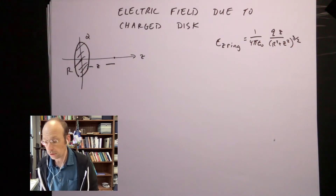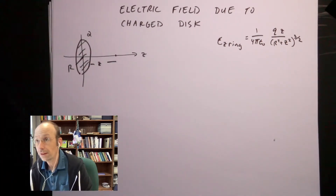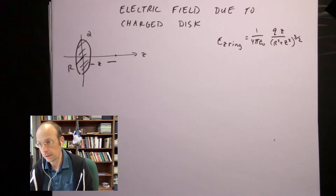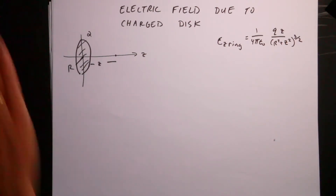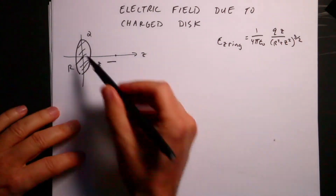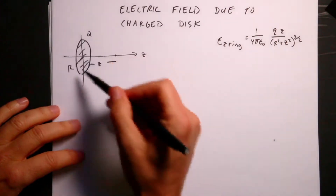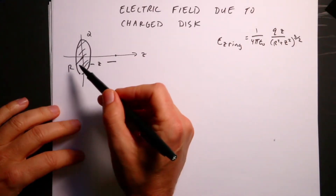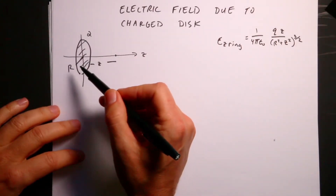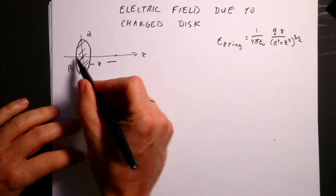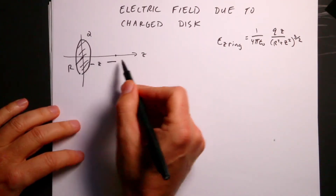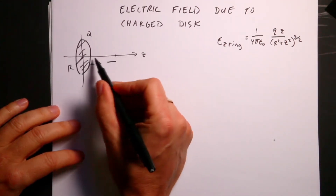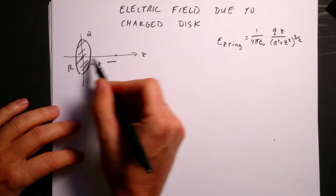So let's go ahead and get started. Here we have a disk, and it has a total charge Q and a radius R. And I want to find the electric field along an axis that goes through the center of the disk a distance Z away — so this is on the Z axis.